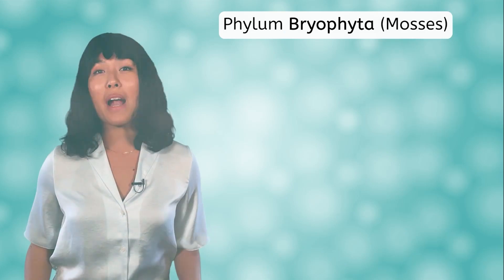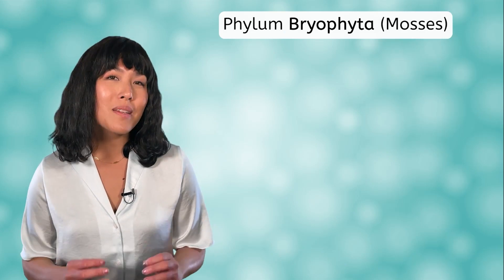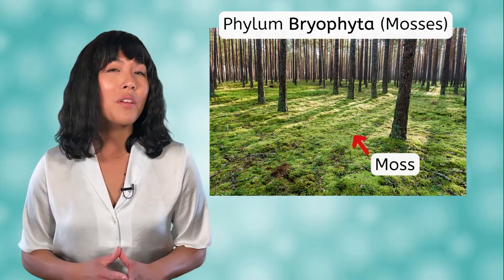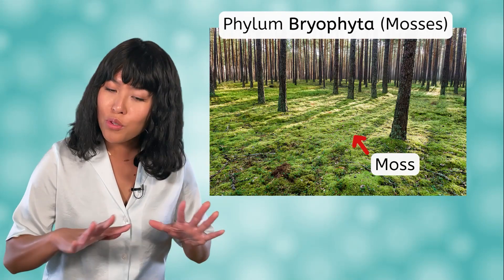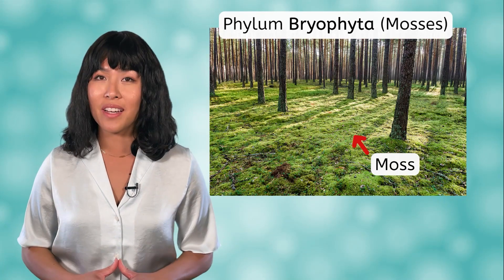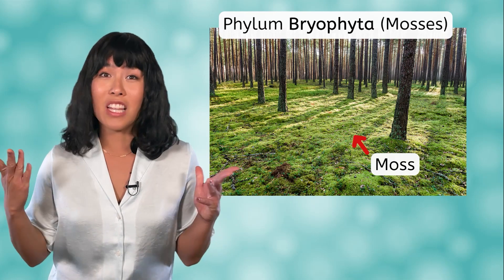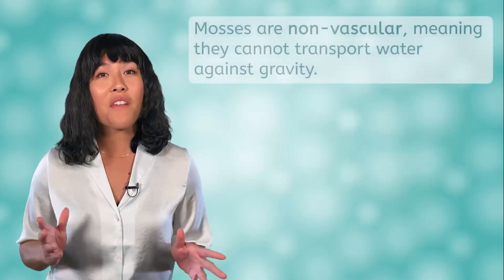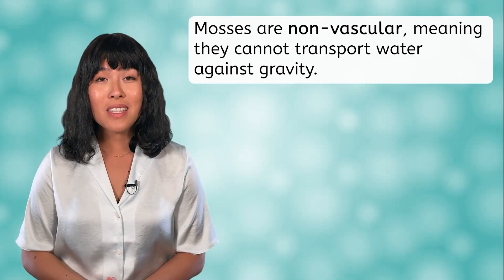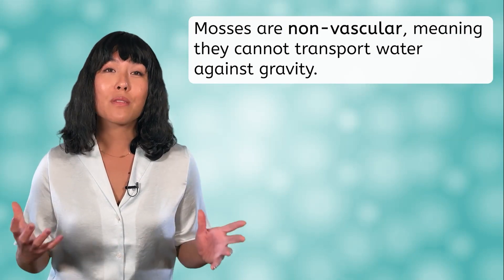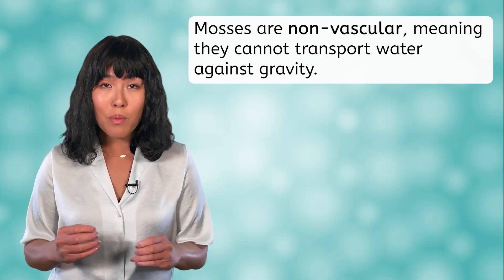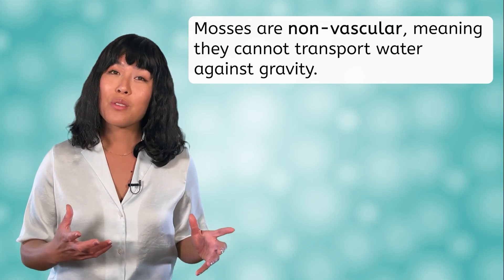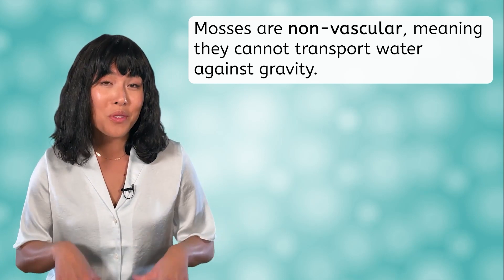The bryophyte phylum includes the simplest plants, such as mosses. You'll generally find these plants growing along the ground in wet, shady areas. They can't grow tall like grasses or trees because they are non-vascular plants. This means that they don't have specialized tissue capable of transporting water against gravity, so they stick to their role as ground covers.